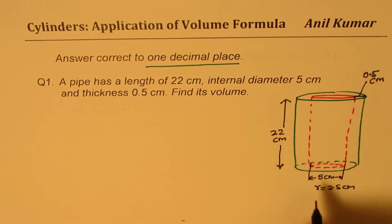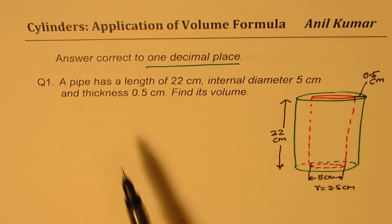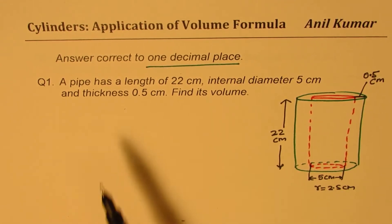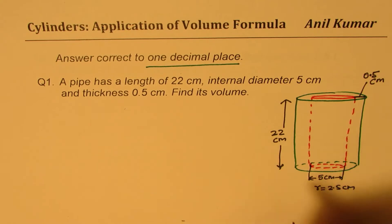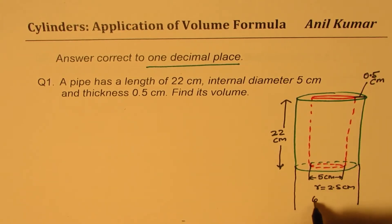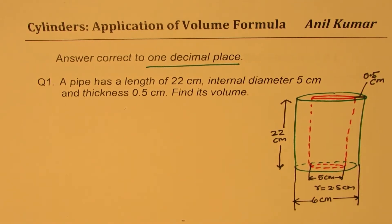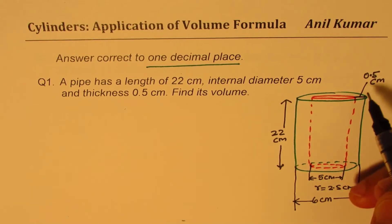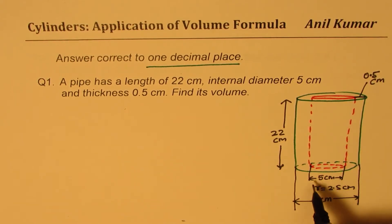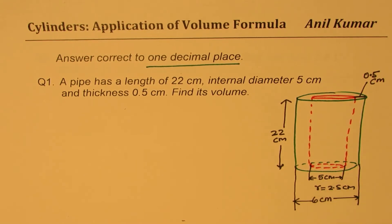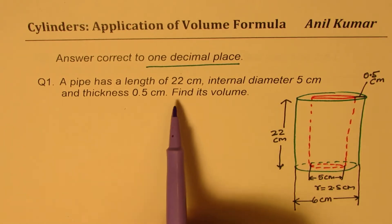So that means the external diameter will be 6 centimeters — this thickness is 0.5 on one side and 0.5 on the other side, giving 1 extra centimeter to the diameter. Now what do we need to find? We need to find its volume.